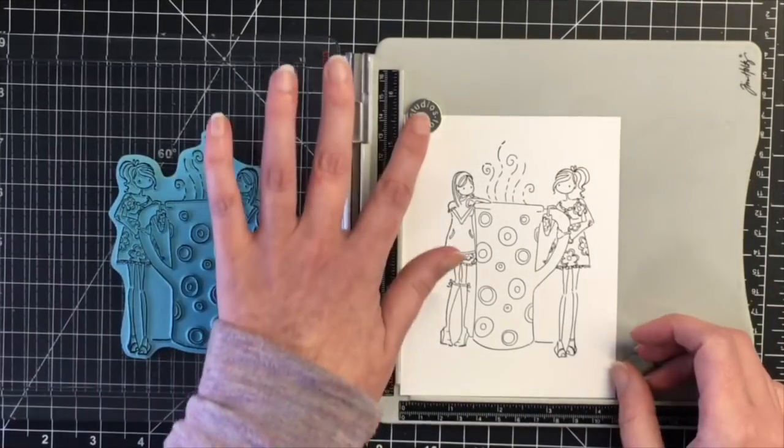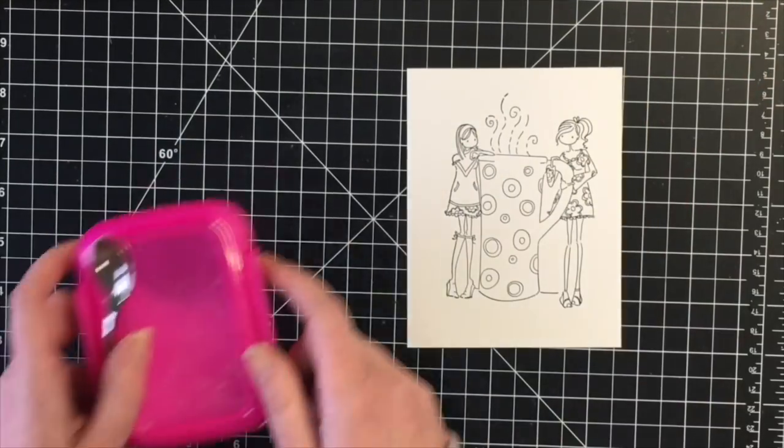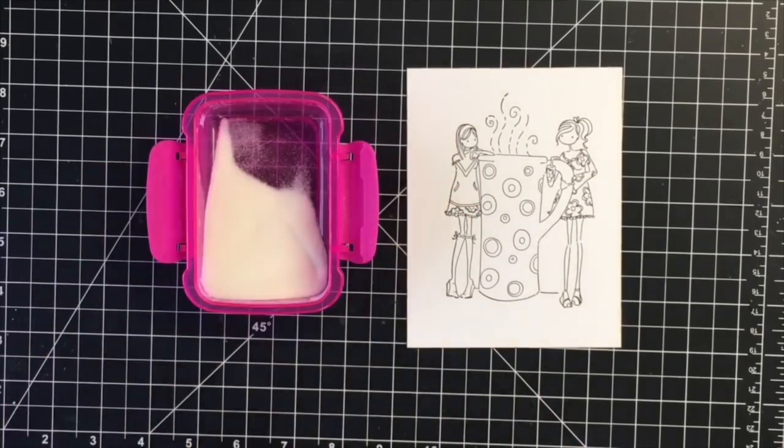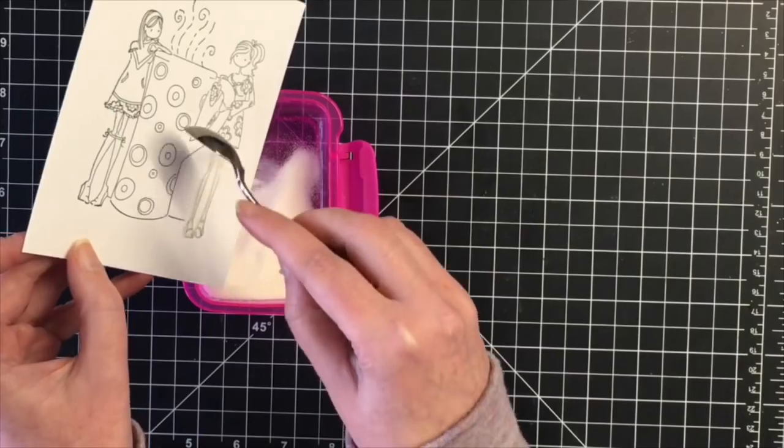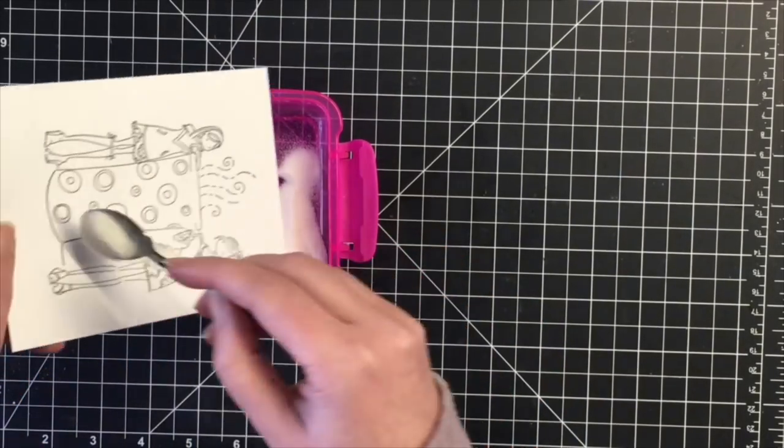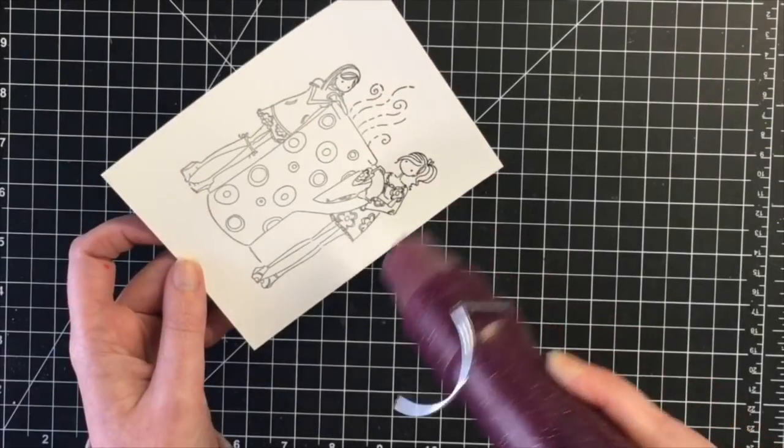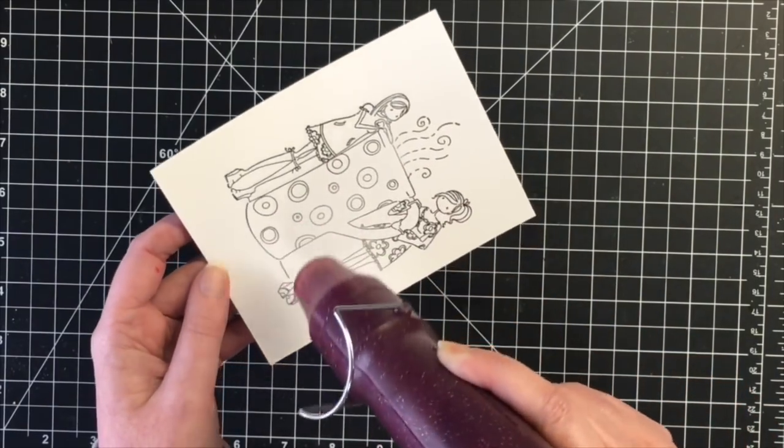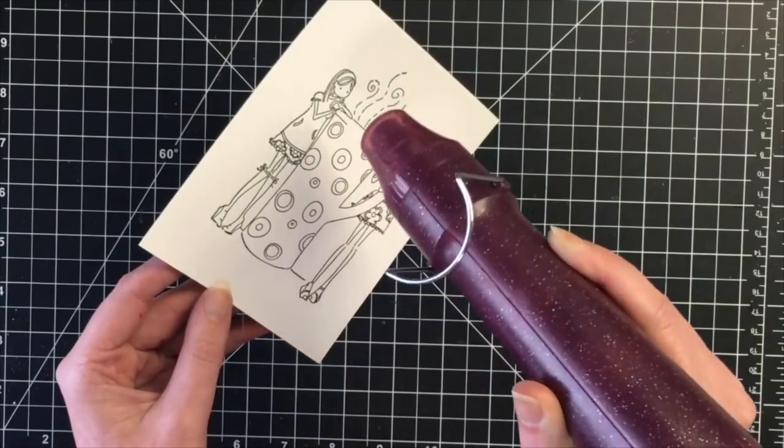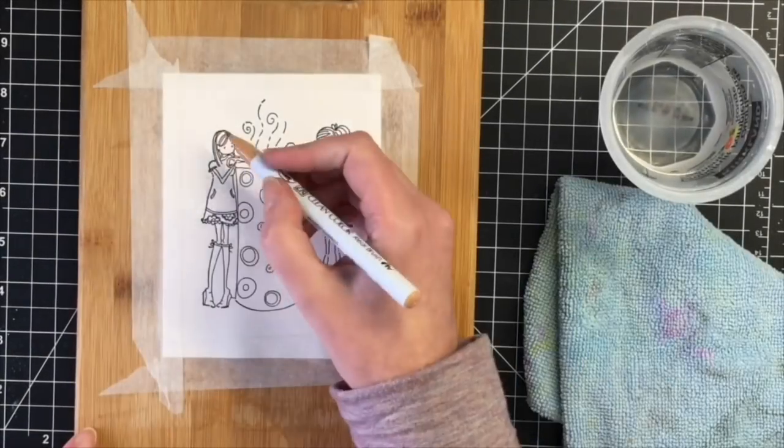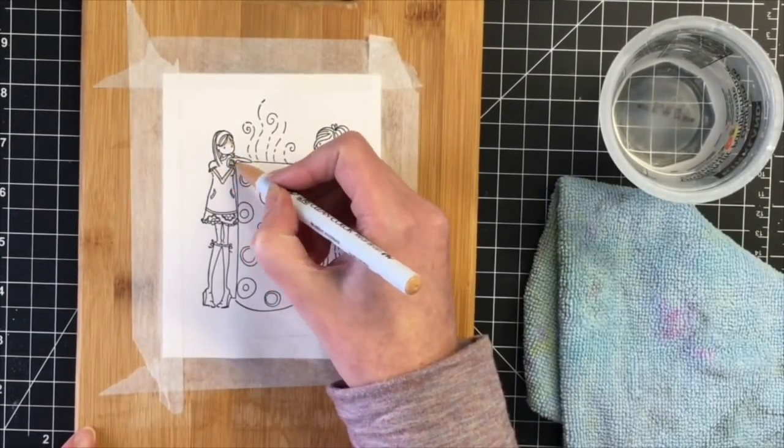I'll be using some clear embossing powder, and the lines on this are really thin, so once I get my heat tool to it, it doesn't take very long at all. I just want to heat emboss it because I am going to be using my Zig Clean Color Real Brush Markers here to color in this image, and this just helps so it doesn't spread onto areas of the card that you don't want it to.